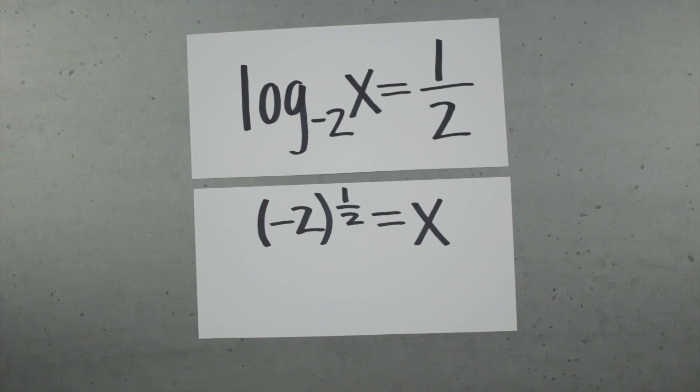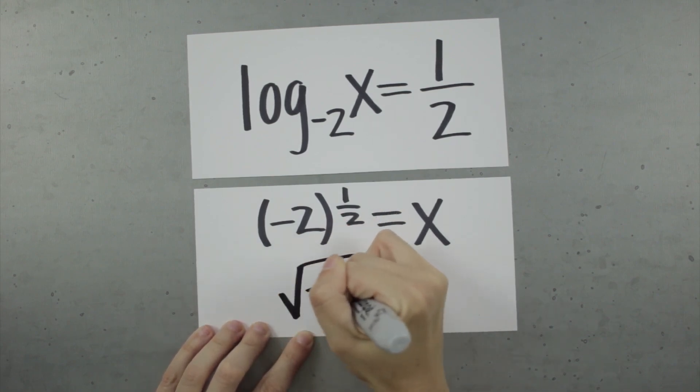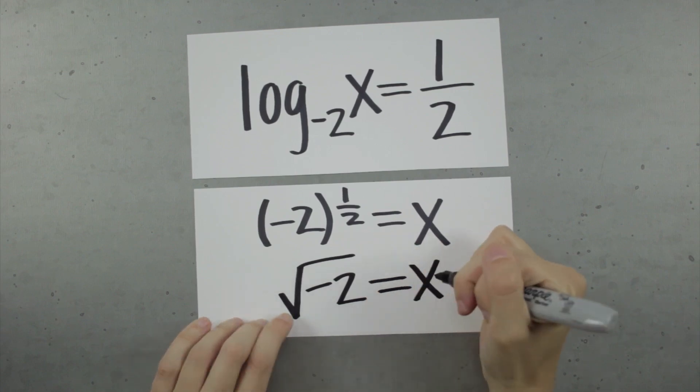So for example, if we have the base negative 2 for our logarithm, and we then want to solve log base negative 2 of x is equal to 1 half, then we're really solving the equation x is equal to negative 2 to the 1 half power, or x is equal to the square root of negative 2.